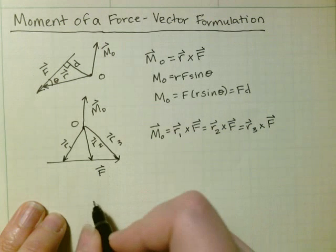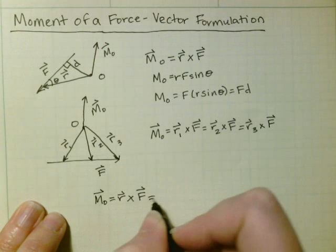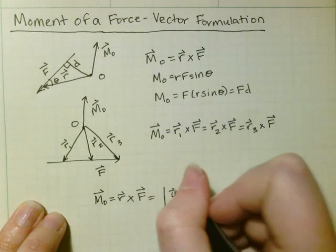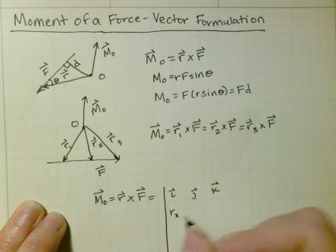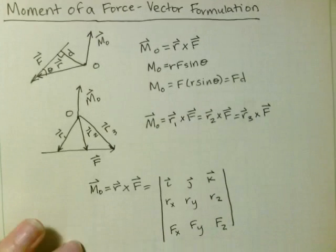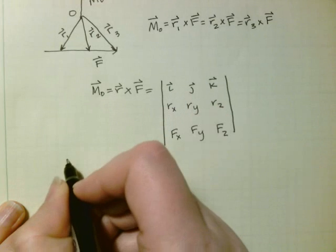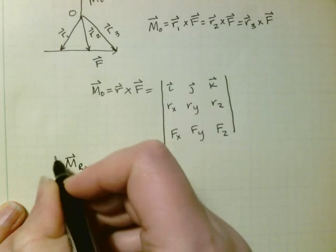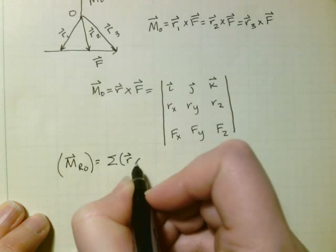And then just like we did with a cross product, MO can then be found using the IJK table. And then if you had multiple forces, you could find the resultant moment about point O as just the sum of all of your R cross F.